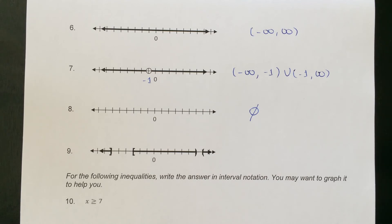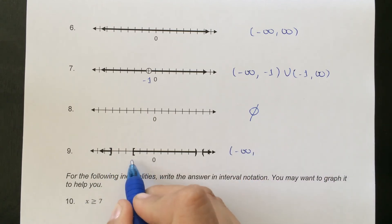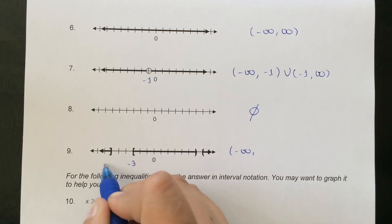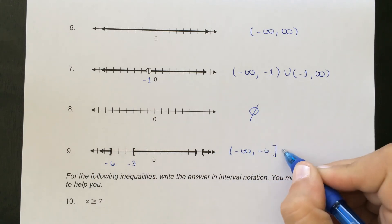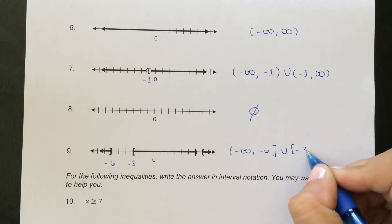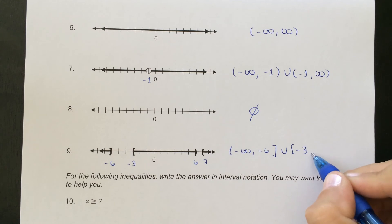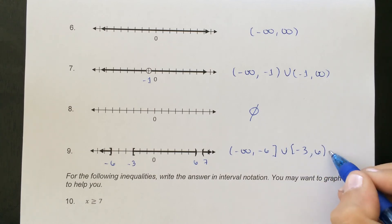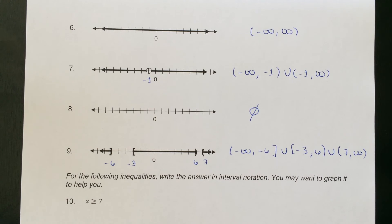Number 9 has three different graphs. We start with the first graph going from negative infinity up to negative 6 with a bracket. Then union, negative 3 up to 6 with a parenthesis. Then union, 7 up to positive infinity. We can have as many segments as we want — each lists the different intervals, and the unions make them one combined answer.